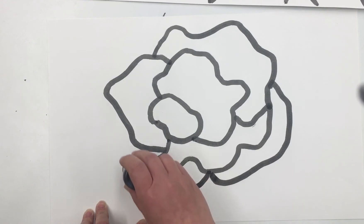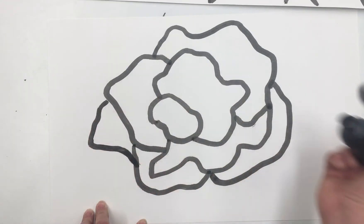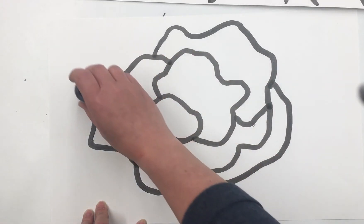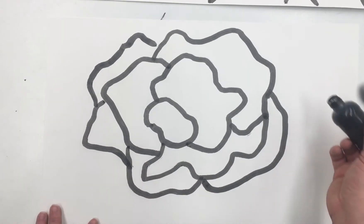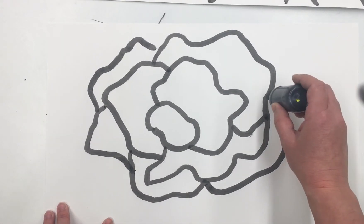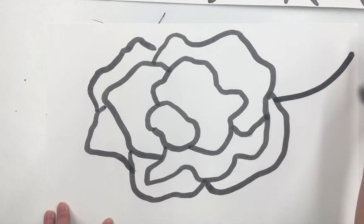I'm going to add a few smaller ones. Maybe one here. I could keep going, but I want to leave a little room here for the beginning of a leaf or a stem.